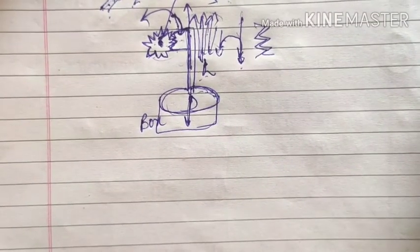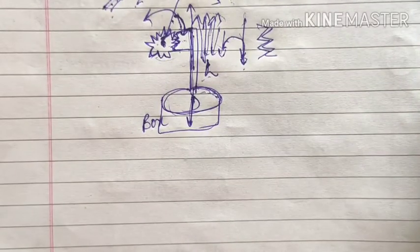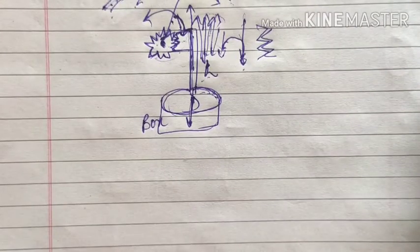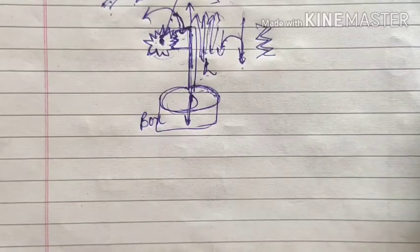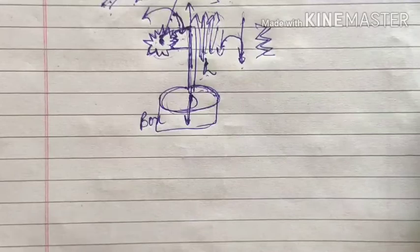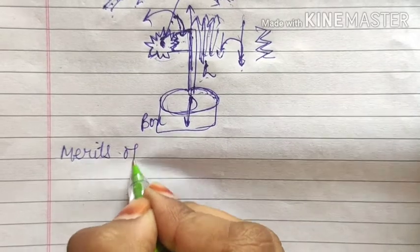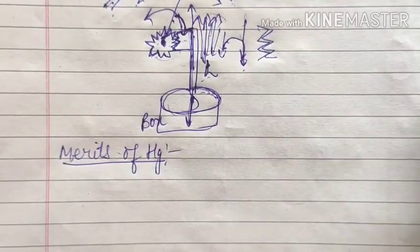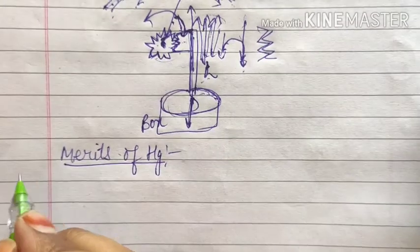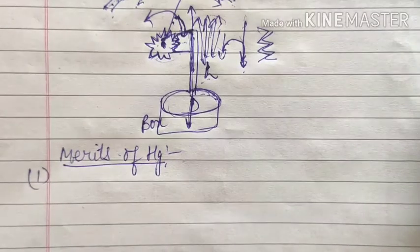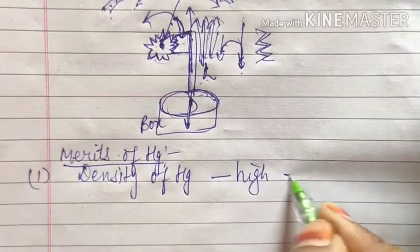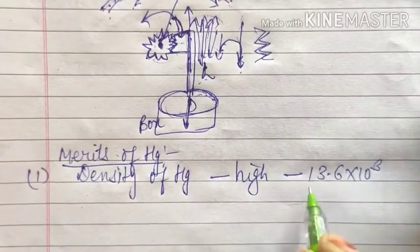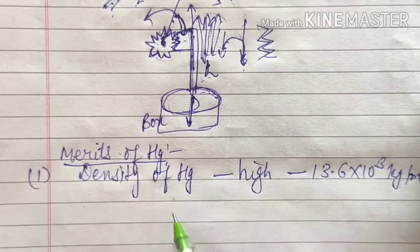Now we have some important points regarding using mercury as a barometric liquid and why we cannot use any other liquid — most probably water, because it is free of cost and available everywhere. So why don't we use water instead of mercury? The first point is the merits of mercury (Hg). The density of mercury is very high — approximately 13.6 × 10³ kg/m³.